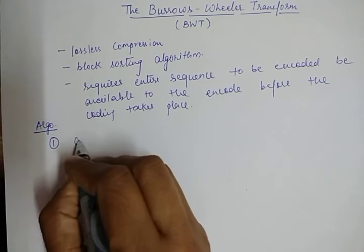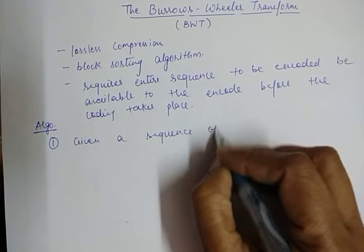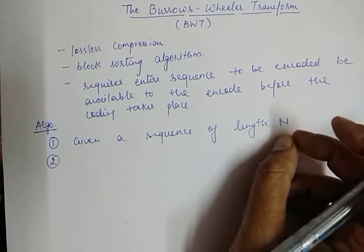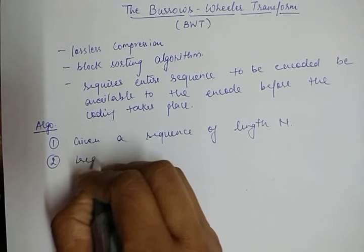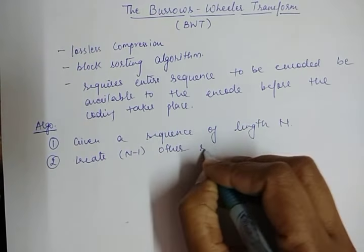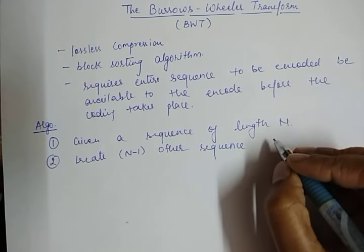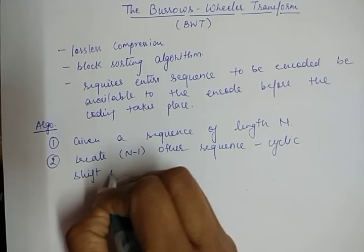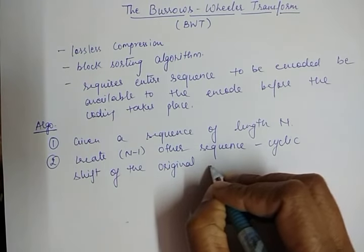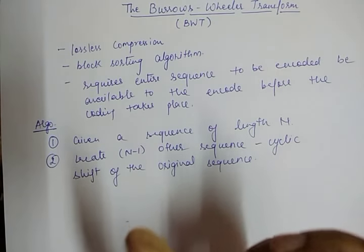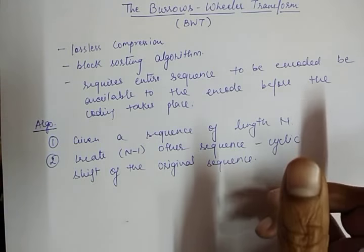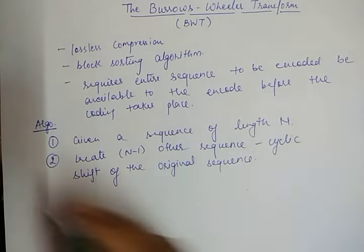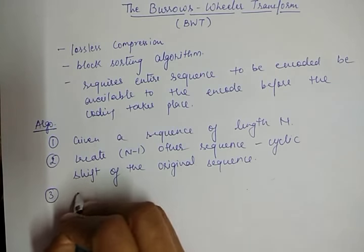The first step is that we have a sequence of length N. After that, we create N minus 1 other sequences, where each of these N minus 1 sequences is a cyclic shift of the original sequence. This is the second step — we make other sequences by cyclically shifting the original sequence.